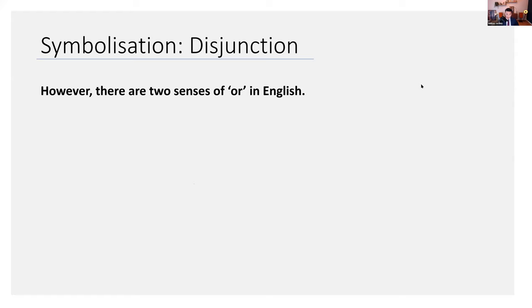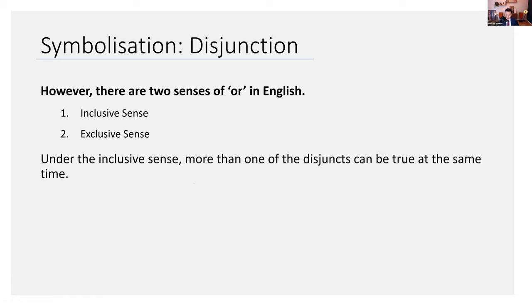But it gets trickier. In English, there are two senses of the or. Somebody asked about this last time, and I talked about it briefly earlier today. We'll consider it more in-depth now. There is what's called the inclusive sense, and there's what's called the exclusive sense. In the inclusive sense, more than one of the disjuncts can be true at the same time, but they don't both have to be true.